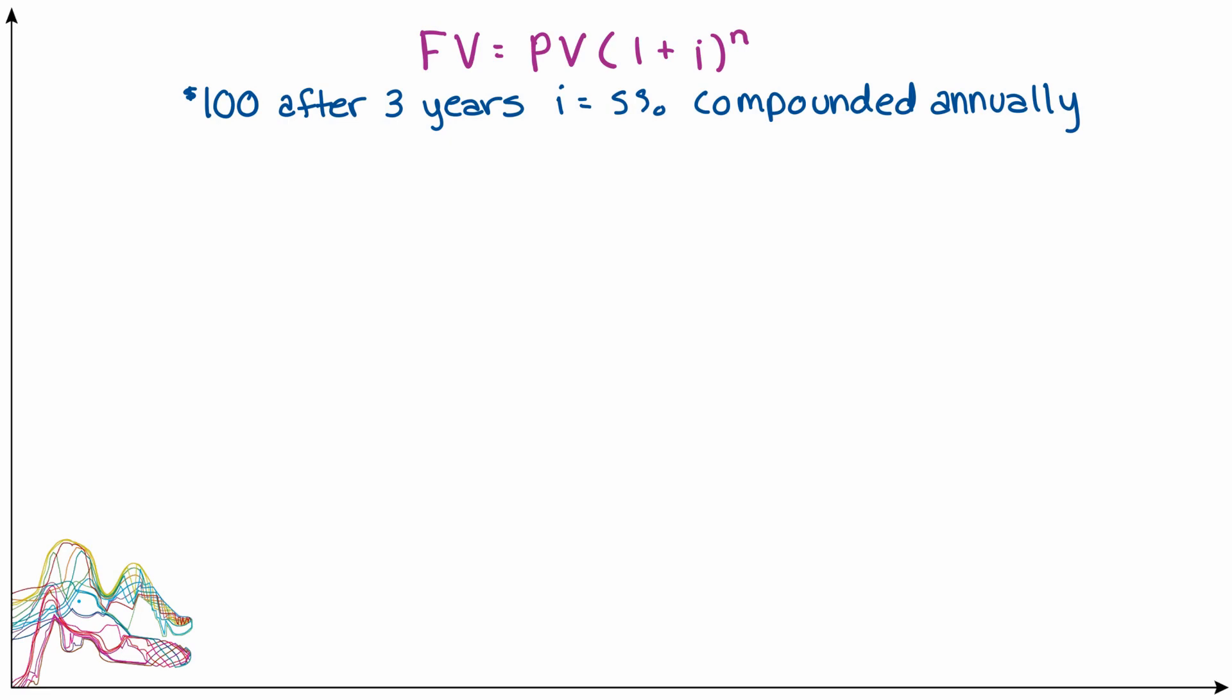Logically, we know that we should have to invest less than $100 today in order to get $100 in the future. And we can actually use the same formula that we had been using to go forward in time to go backward in time. In this case, our $100 after three years is in fact our future value because that's the amount that we want to have in the future.